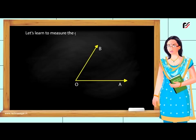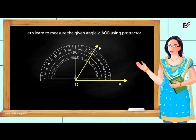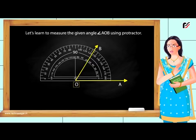Let's learn to measure the given angle AOB using protractor. In order to measure angle AOB, place the protractor in such a way that its center is exactly on the vertex O of the angle of the baseline. Read the mark through which the arm OB passes. Here, we can see that angle AOB is equal to 60 degrees.